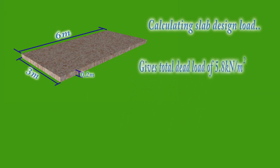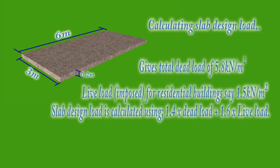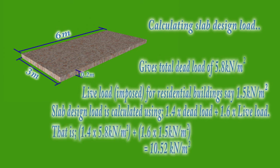Also, assuming a live load for residential buildings of say 1.5 kilonewtons per meter squared, the design slab load can now be calculated using the formula: 1.4 times dead load plus 1.6 times live load. That is, 1.4 times 5.8 plus 1.6 times 1.5, which gives 10.52 kilonewtons per meter squared.